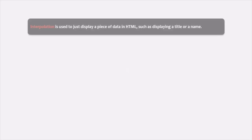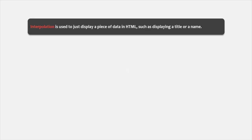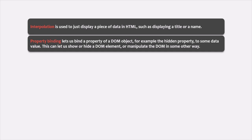The difference between string interpolation and property binding is that in string interpolation, we use it for displaying a piece of data in the HTML — for example, displaying the title of a product or name of the product. But we use property binding to bind the property of a DOM object to some value from the component class. In this way, property binding allows us to show or hide a DOM element or manipulate the DOM in some other way.